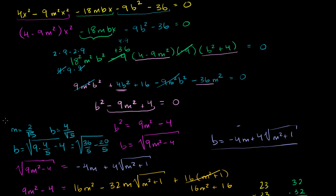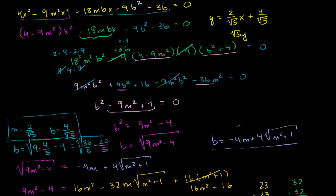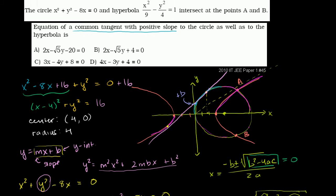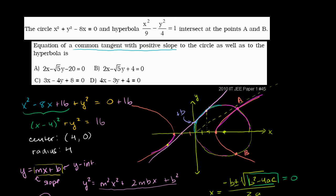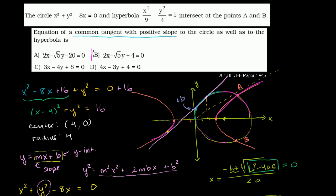We are done. We now know the slope of that tangent line with positive slope. Its equation is y equals 2 over the square root of 5 times x, plus 4 over the square root of 5. Multiplying everything by the square root of 5 gives: square root of 5 times y equals 2x plus 4. Rearranging: negative 2x plus square root of 5 times y minus 4 equals 0. Multiplying by negative 1: 2x minus the square root of 5 times y plus 4 equals 0. The answer is B. This was probably the most painful problem I've done in my life.